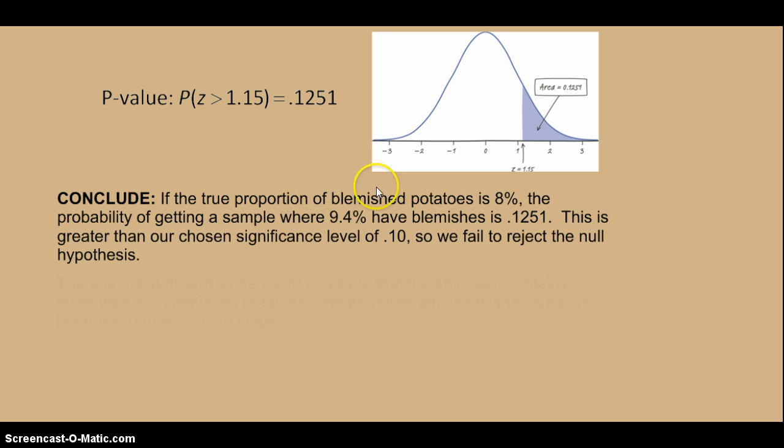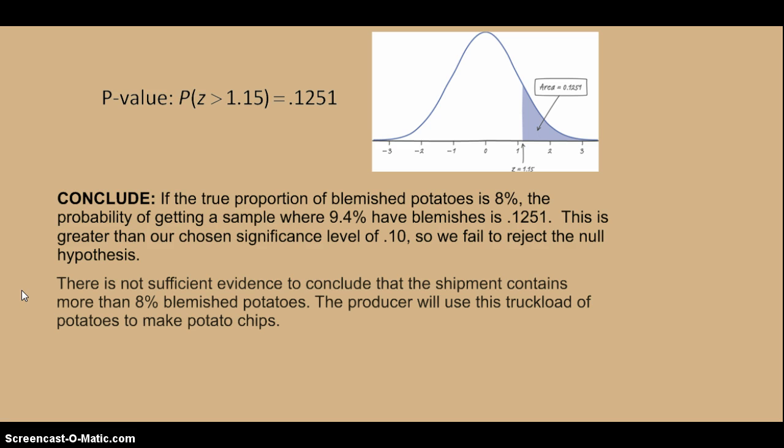I really want you to understand the argument that we want to compare our null hypothesized value to what we had in the sample and what the probability of that is, tying that all together in the sentence and then comparing it to an alpha. And now that we have all that, now we need our potato sentence. There is not sufficient evidence to conclude that the shipment contains more than 8% blemished potatoes.